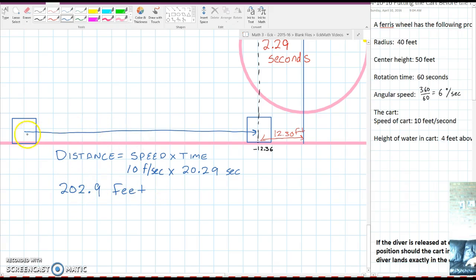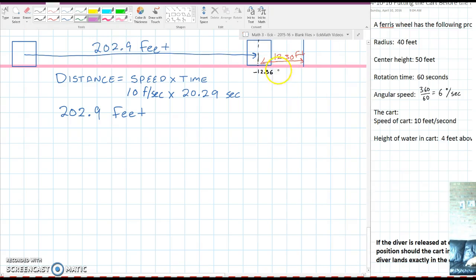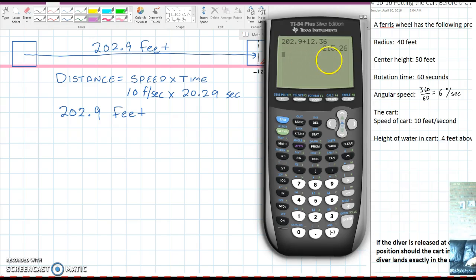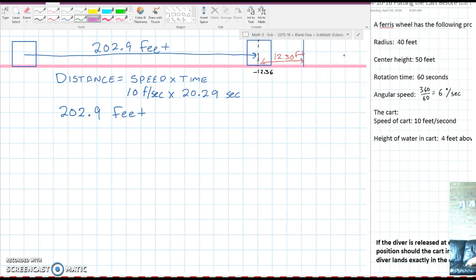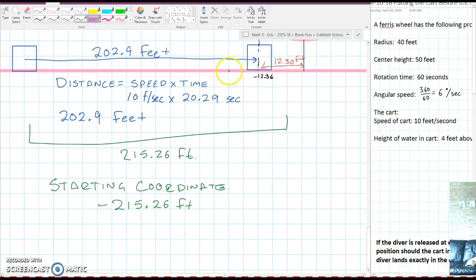I'm going to leave that here, but I'll also write it up here on the diagram next to this arrow, 202.9 feet. Now I'm going to take that 202.9 and add to it the 12.36 to find the total distance from zero to the starting position of the cart. I did that earlier and got 215.26 feet. So this is a total distance of 215.26 feet. And so the starting coordinate needs to be negative 215.26 feet. The negative represents the direction and the 215.26 represents the total distance traveled.